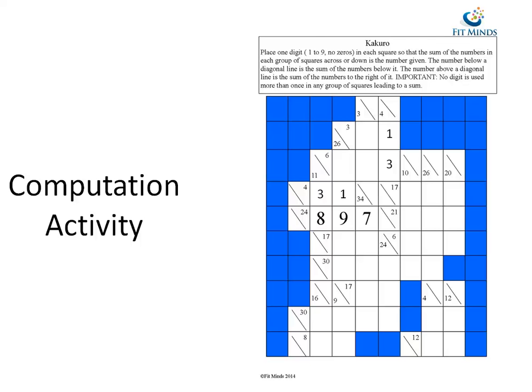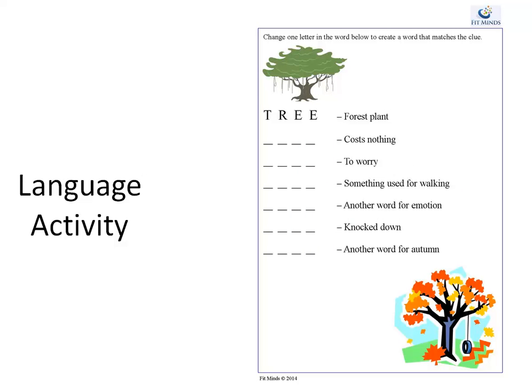After the computation activity we exercise the language portion of the brain. This language activity asks them to change one letter in the word above to match the clue. In this case we've gone from 'tree' to 'free,' which costs nothing, then to 'fret,' which is to worry, and something used for walking is 'feet.' You just work through the word ladder that way. There's a different activity in every session — sometimes crosswords, word searches, or word games. It's always something different.